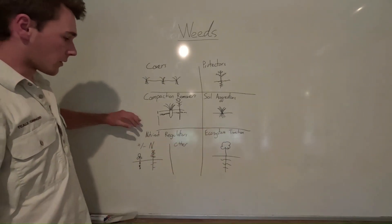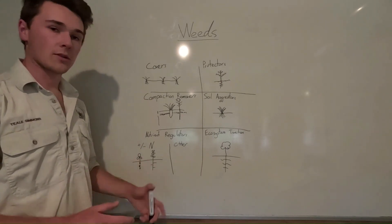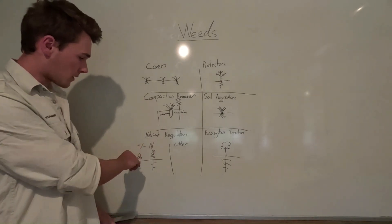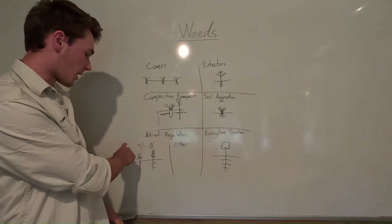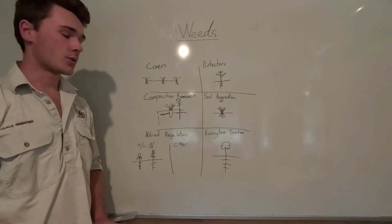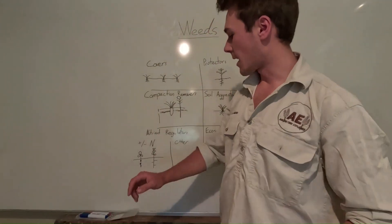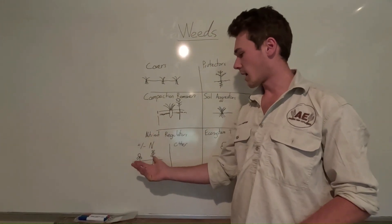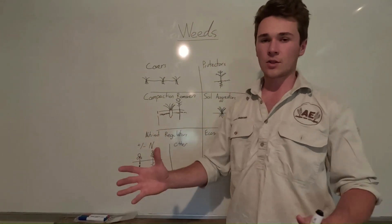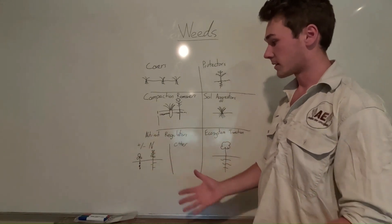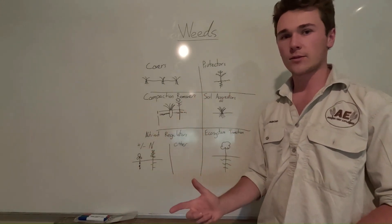Another one is, and this is probably a really big one, nitrogen or nutrient regulators. I've broken that up into nitrogen specifically, plus and minus, and other nutrients. In terms of the nitrogen, we have plus nitrogen. So all the other conditions are available for these plants to grow, except there's a lack of nitrogen.